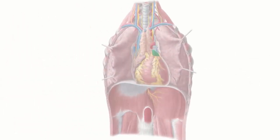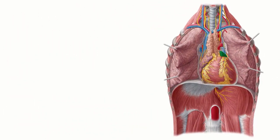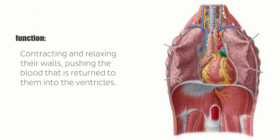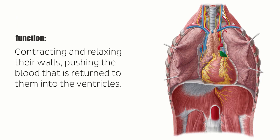The atria of the heart, which are known singularly as an atrium, are a pair of blood-collecting chambers that comprise two of the four chambers of the heart. The main function of the atria is to facilitate circulation by rhythmically contracting and relaxing their walls, pushing the blood that is returned to them via the major venous vessels during ventricular systole into the ventricles.